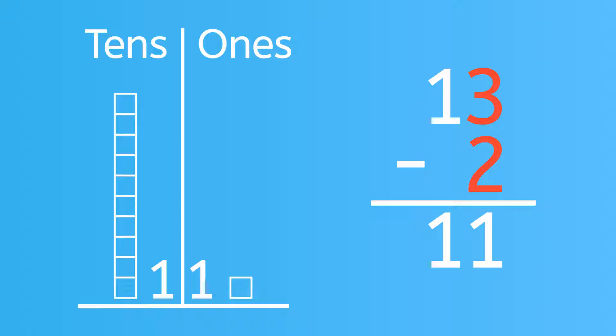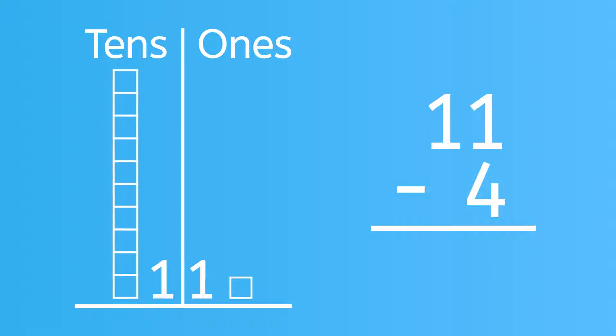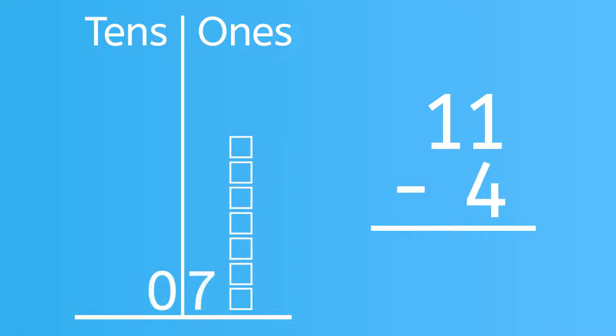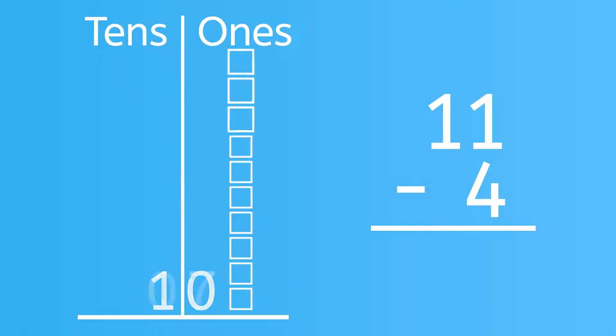However, what happens when the 10 doesn't stay whole? Let's look at 11 as a block of 10 plus 1. We can't take 4 away from the block of 1, so there are a few different ways to think about this. We can take 4 away from 10 and then add 1, or we can take 1 away and then take the other 3 away. It doesn't matter how you think about this. The answer is 7.